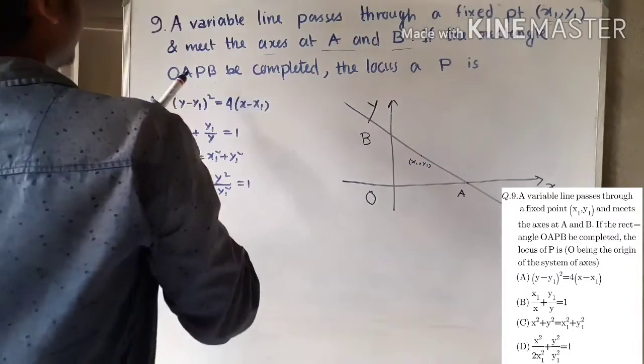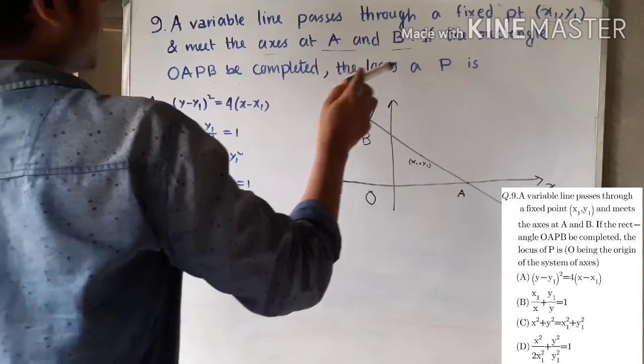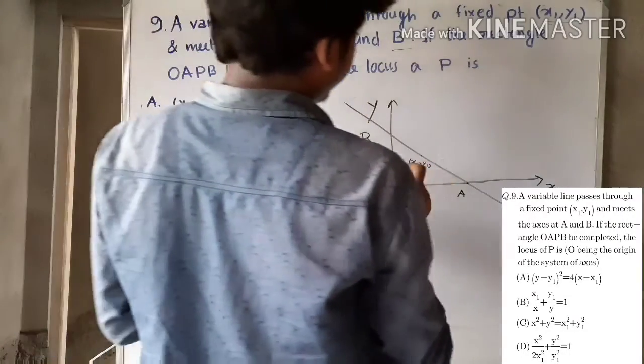And this line also passes through the point (x1, y1). The line passes through this point here.